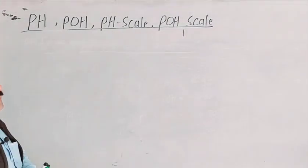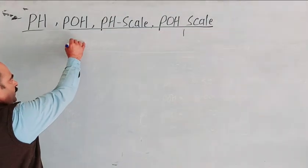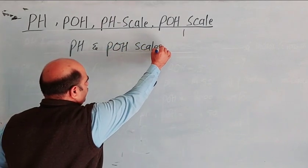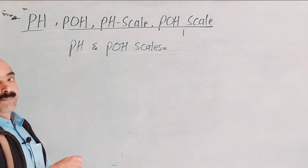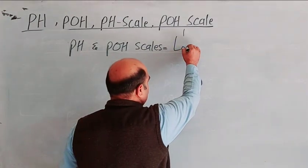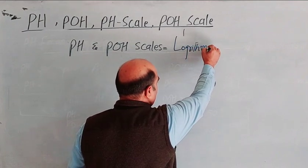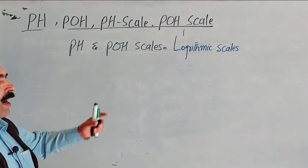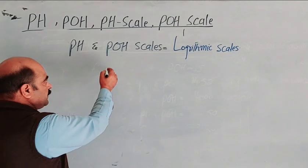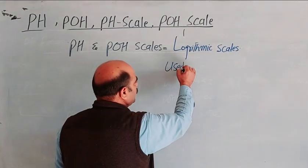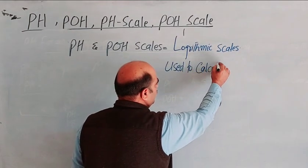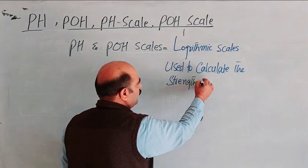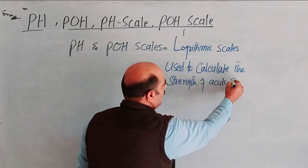pH and pOH scales are logarithmic scales. These are used to calculate the strength of acids and bases.